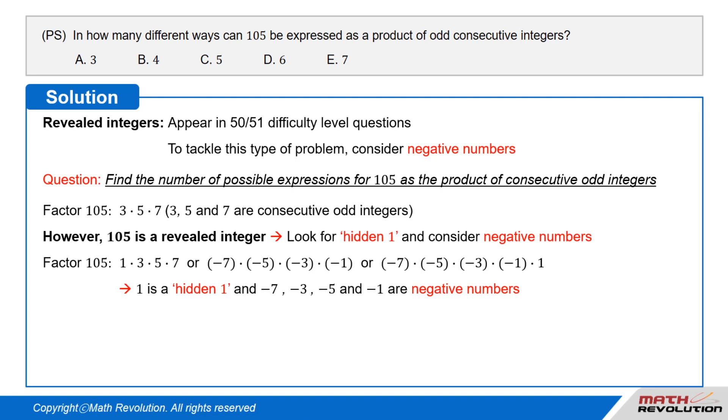So, we can factor 105 as 1 times 3 times 5 times 7 or negative 7 times negative 5 times negative 3 times negative 1 or negative 7 times negative 5 times negative 3 times negative 1 times 1.